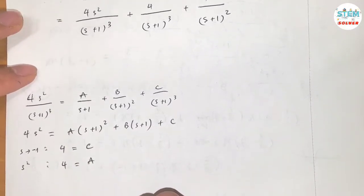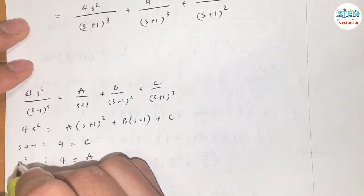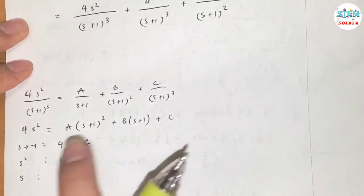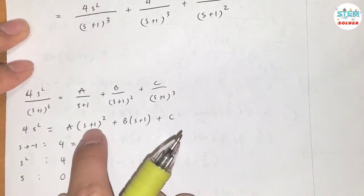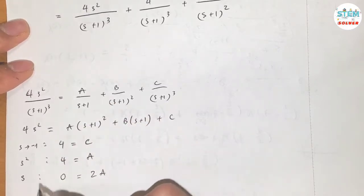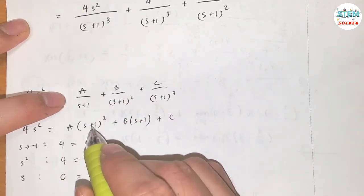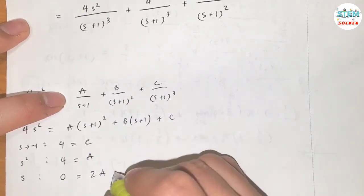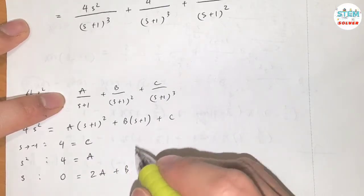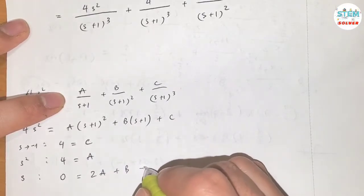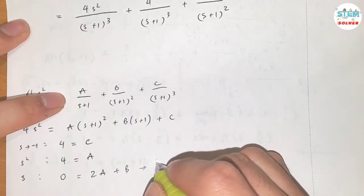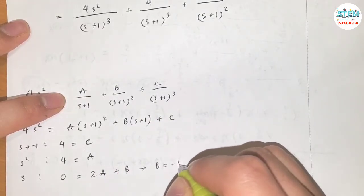Looking at the leading coefficient of s squared: on the left I have 4, on the right I have A, so A equals 4. For the coefficient of s to the first: on the left I have zero, on the right I have 2A plus B, so with A equals 4, B equals negative 8.